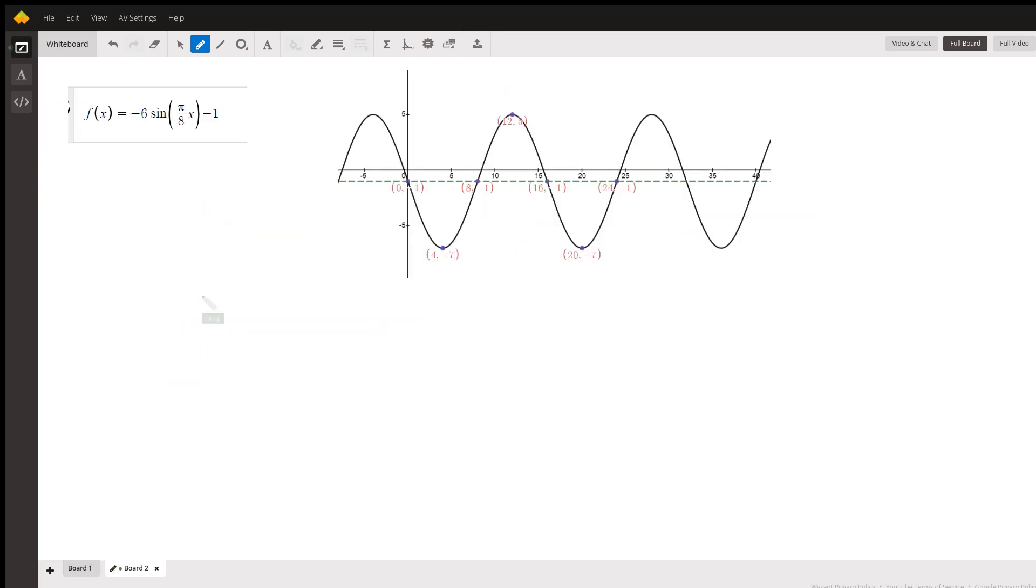There's the equation or the function definition, and there's the graph. Definitely going through the one, two, three, four, five, six, seven given points. Okay, there you go. Hope that helps. If you have any questions, post a comment.